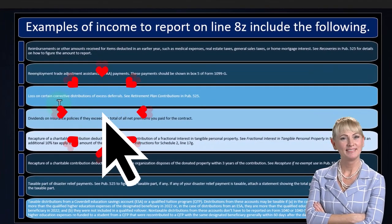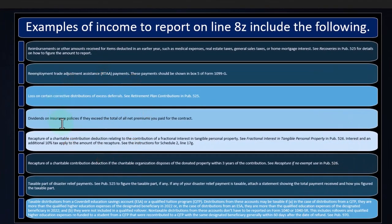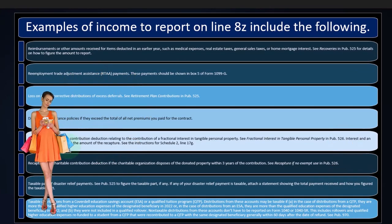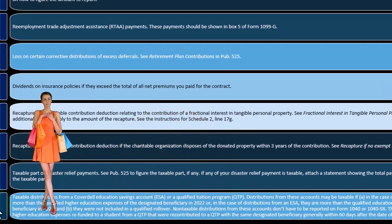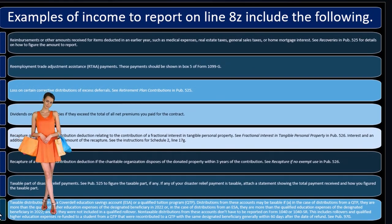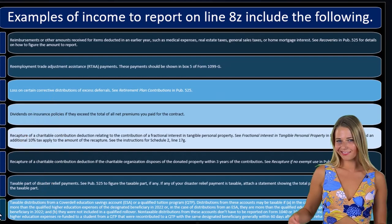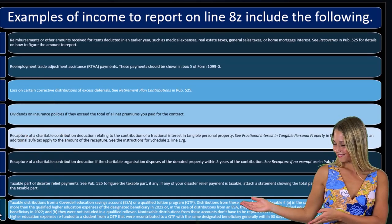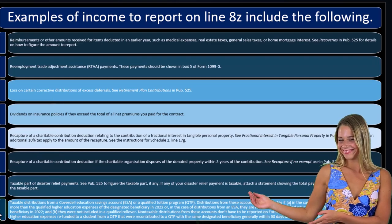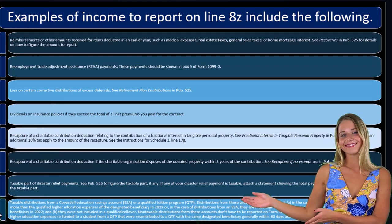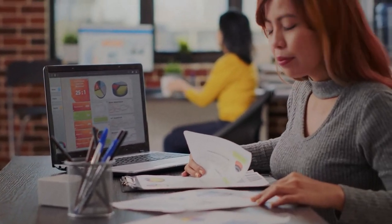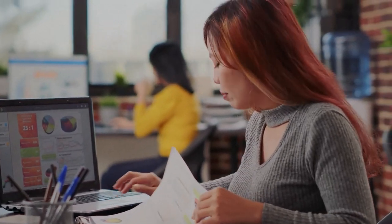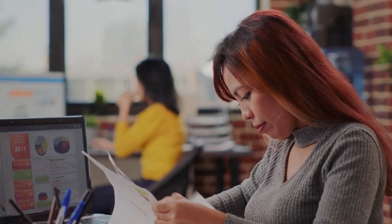Other items include reemployment trade adjustment assistance, losses on certain corrective distributions, dividends on insurance policies, and recapture of the charitable contribution deduction. We also have taxable distributions from Coverdell Education Savings Accounts. Equivalent tuition distributions from these accounts may be taxable, and if so, that's a situation where those investment benefit plans could be subject to tax and would be reported here.